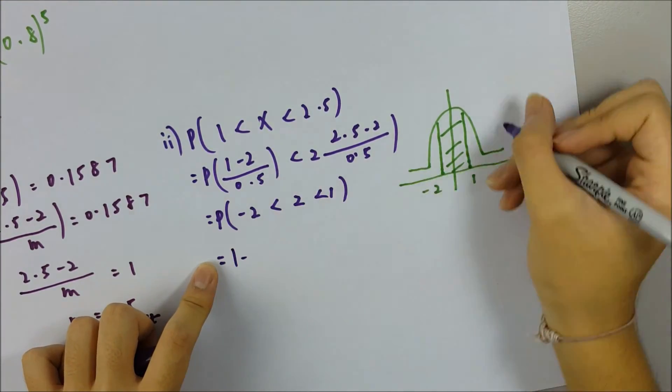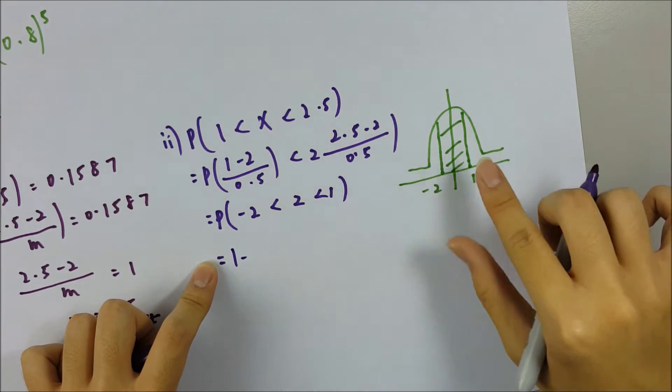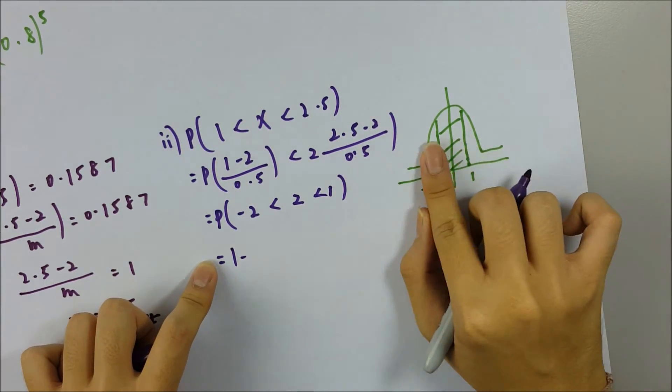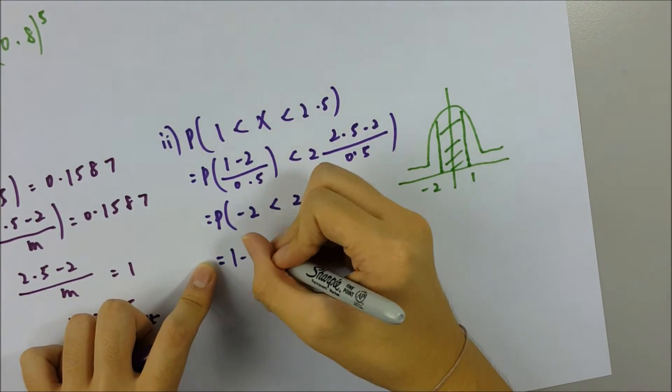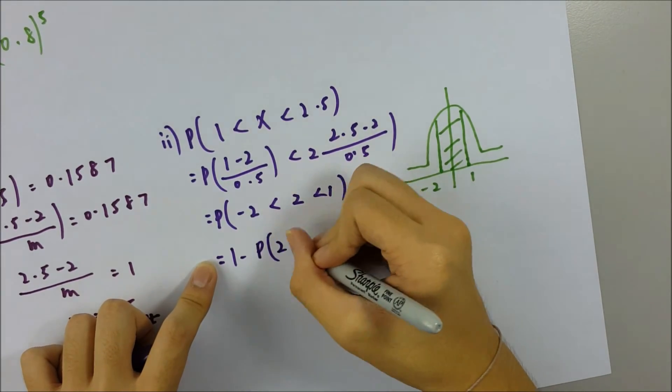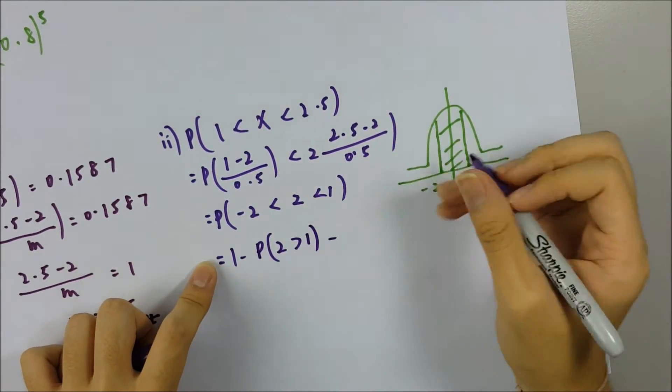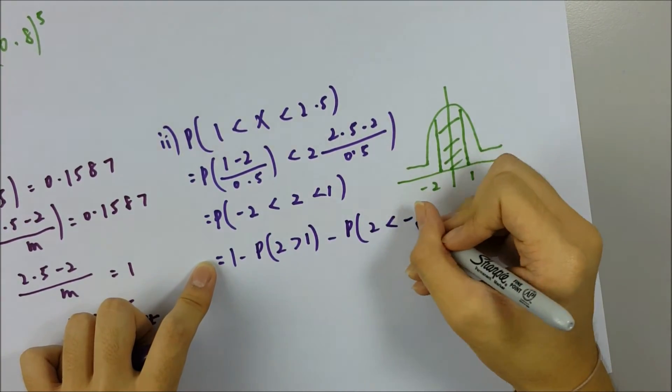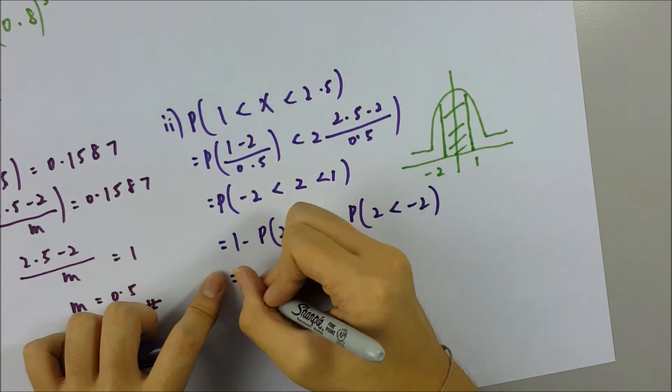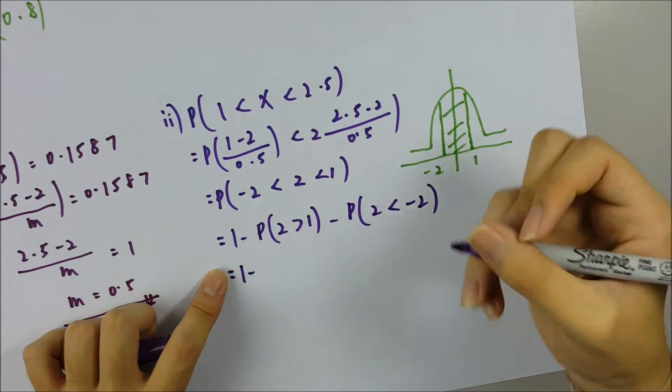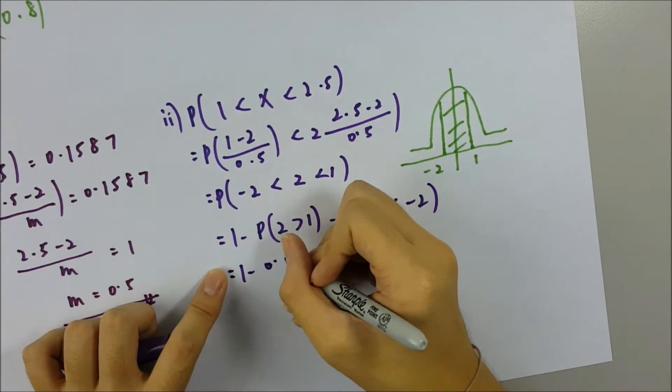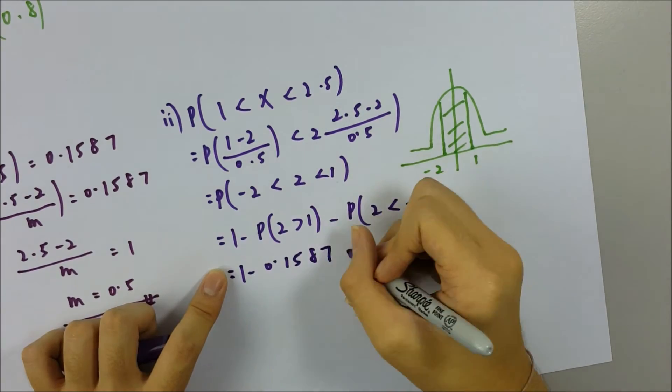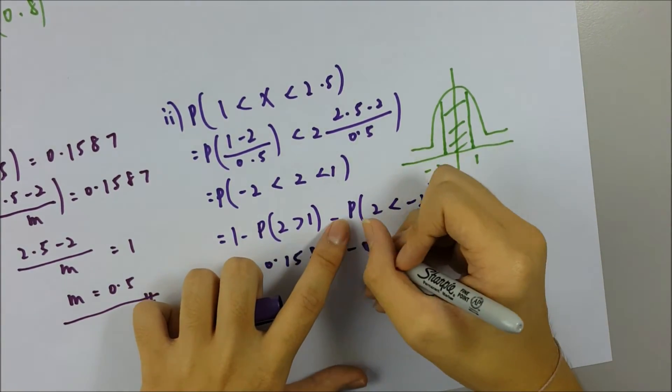So now we use: the whole thing equals 1. So 1 minus the part here and the part here. But here equals P(Z > 1), and this is P(Z < -2).